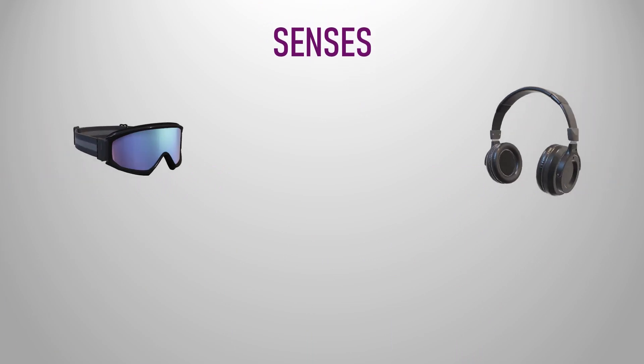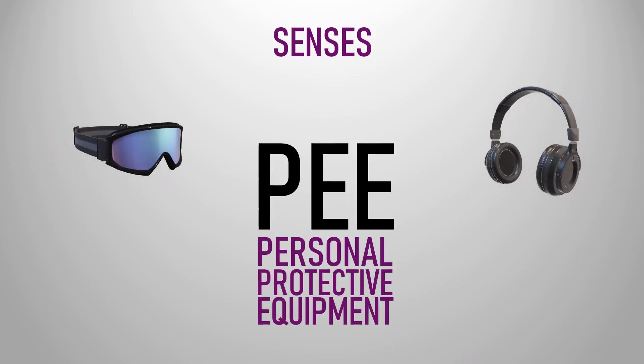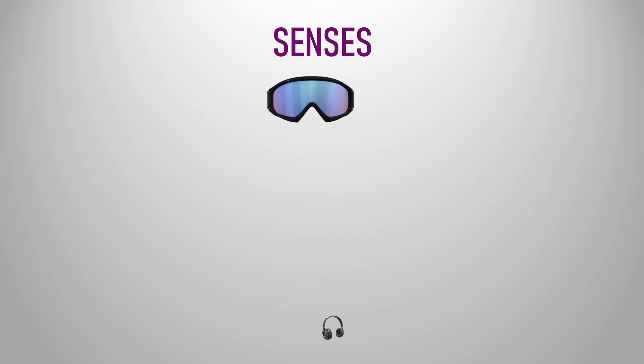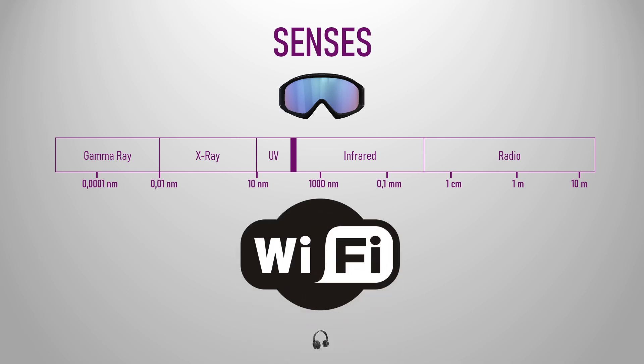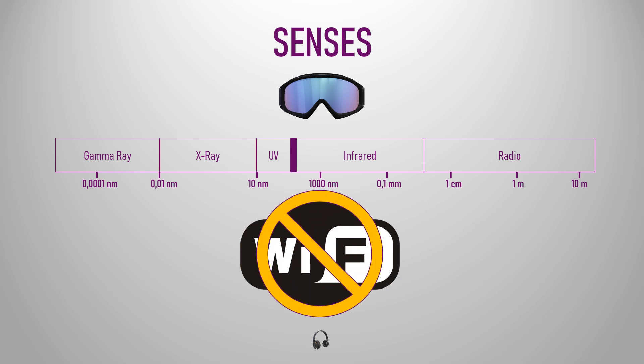There are several sensory receptors that can improve or decrease with PPE, but we will see only these two. The visual one: at this very moment, many things are happening around us, but we can only perceive a small part of what is happening. For example, you cannot see the Wi-Fi signals in your house with your eyes, but they are there.